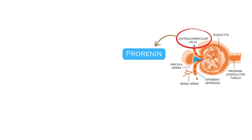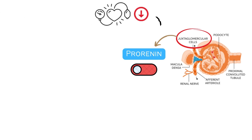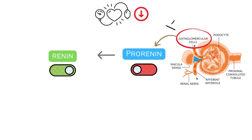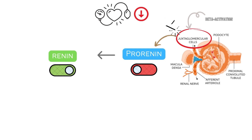But this prorenin is still in an inactive form. When the blood pressure drops, the JG cells get activated, the prorenin cleavage occurs, and here comes renin — the first and foremost player in the RAS system. Also, the JG cells get activated due to beta activation, or activation by macula densa cells in response to a decreased sodium load in the distal convoluted tubule.